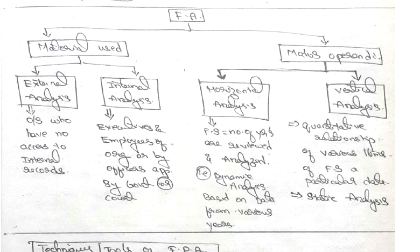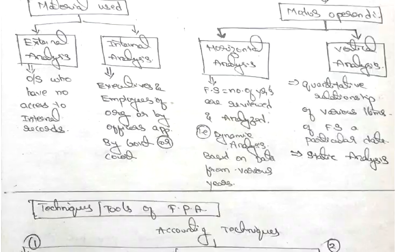Modus operandi: horizontal analysis and vertical analysis. Horizontal analysis is nothing but financial statement number of years are reviewed and analyzed, that is dynamic analysis based on data from various years. Vertical analysis is quantitative relationship of various items of financial statement on a particular date. It's a static analysis.